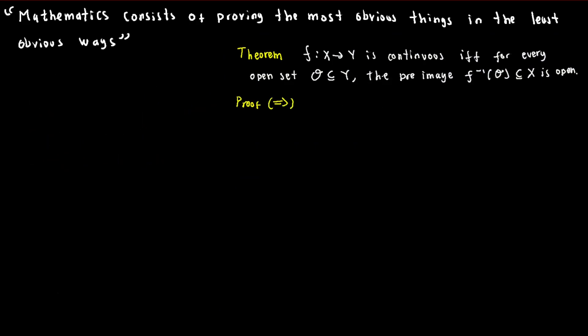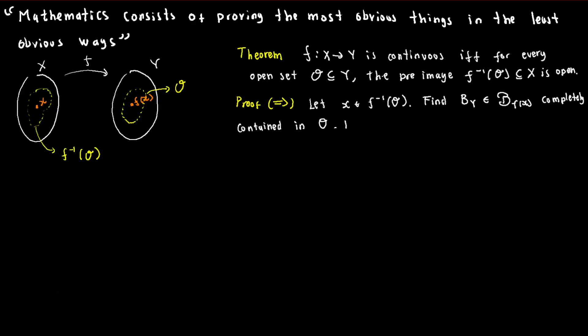To prove the forward direction, let's assume that f is a continuous function, O is an open set of y, and x is a point in the preimage of O. Our goal is to show that x is an interior point of the preimage. Since O is open, then f(x) is an interior point of O, and therefore there exists an open ball B_y centered at f(x) that is completely contained in O.